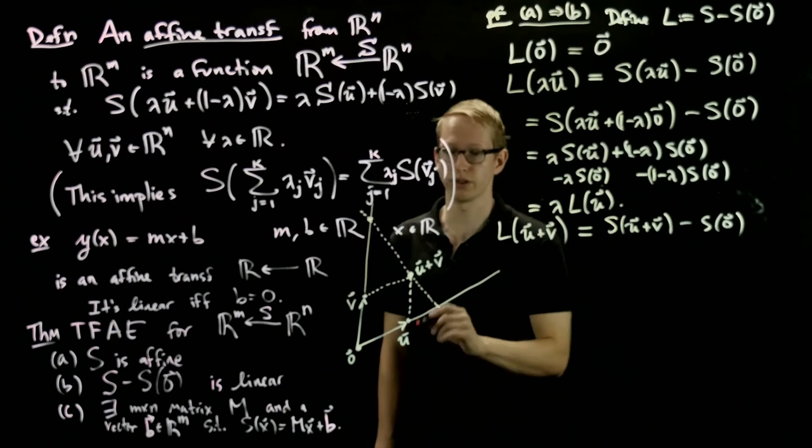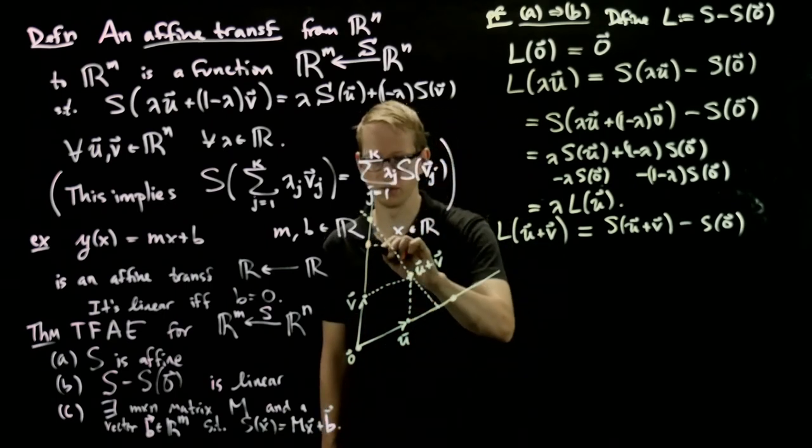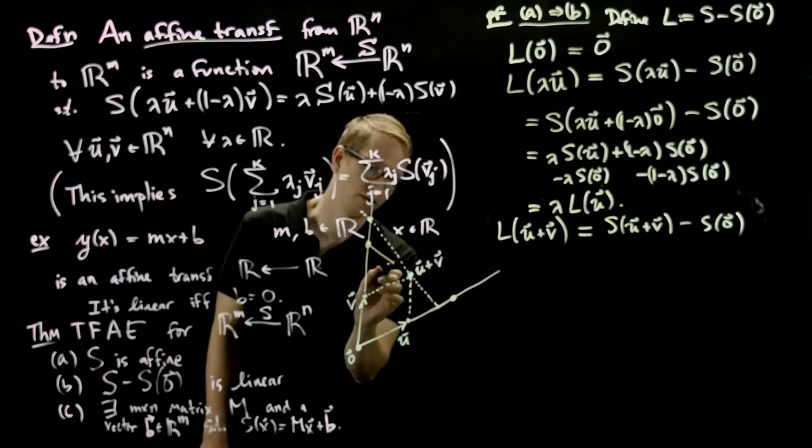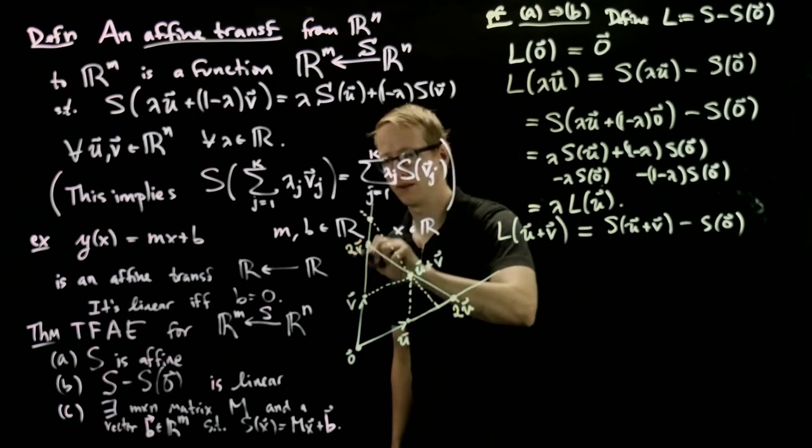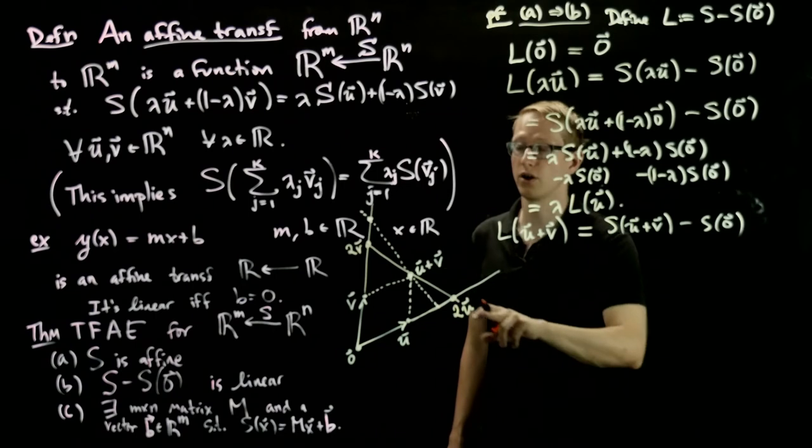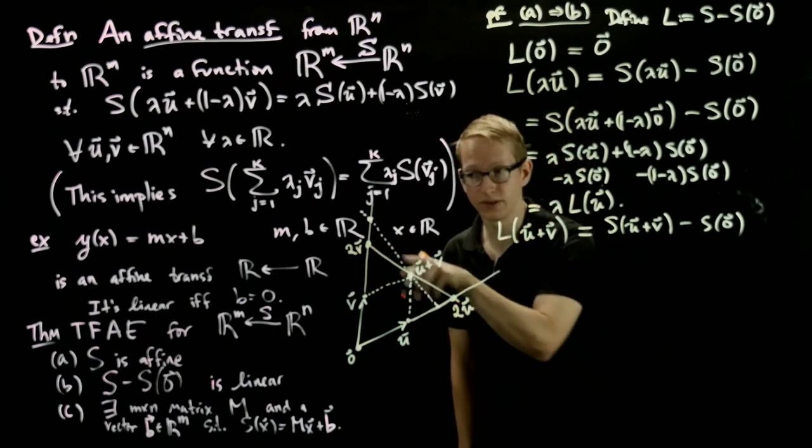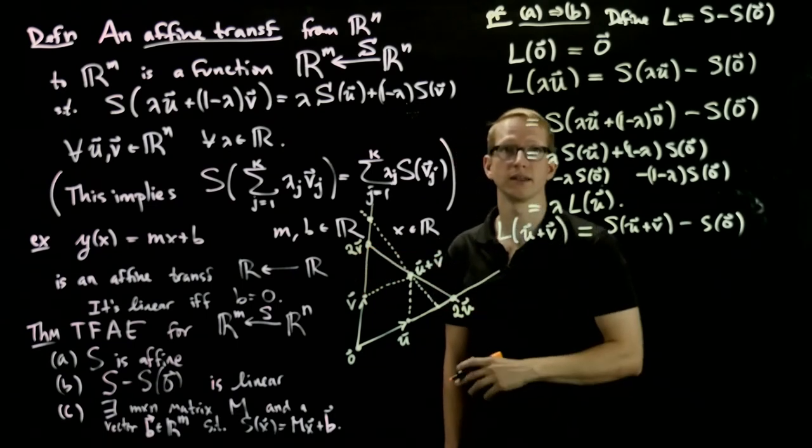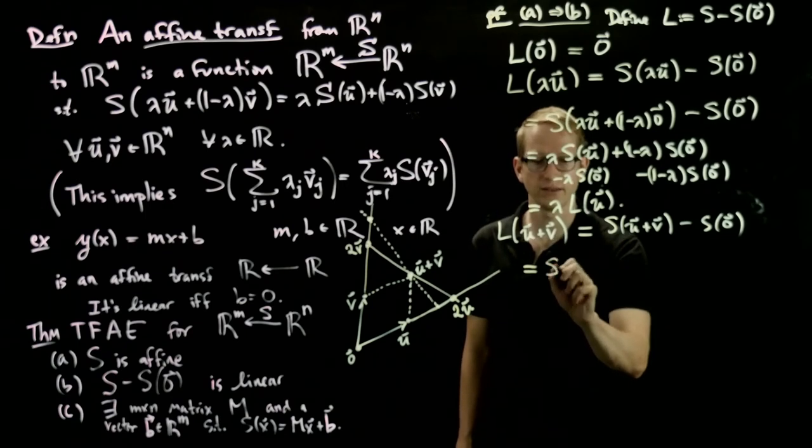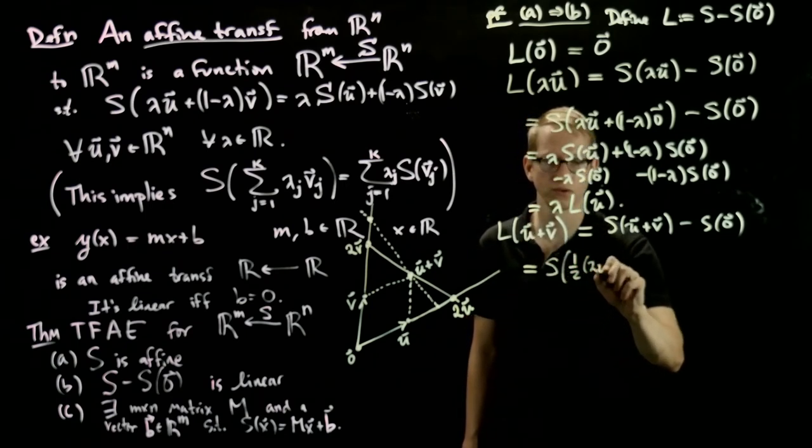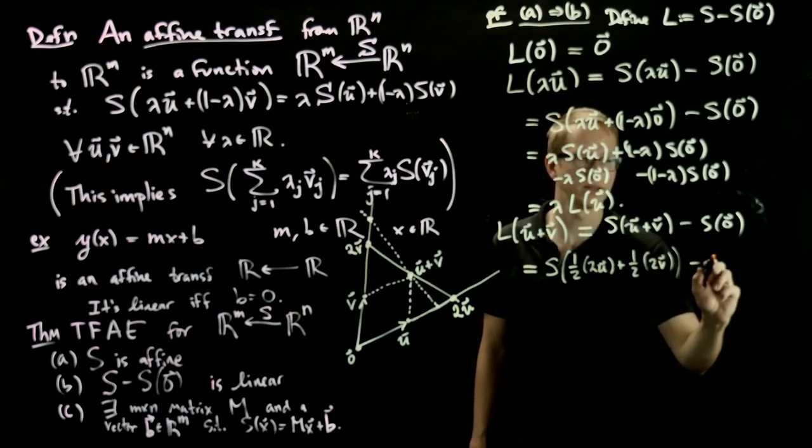Or we can take a simple shortcut and notice that if we multiply this by 2, then those two points, 2u and 2v, are on the line that goes through u + v. And how do I know that? Well if I take half of this and half of this, I get exactly this. And half and half is an affine combination. So this equals s(½·2u + ½·2v) - s(0).